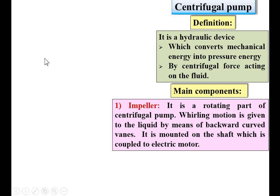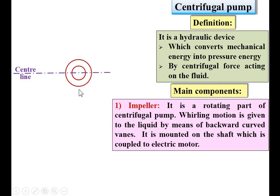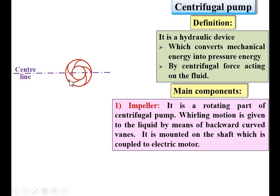So first I am going to draw part 1: impeller. This is the center line of the pump, and here is the impeller. These are the backward curved vanes. As per the description, the impeller is a rotating part of the centrifugal pump — it rotates in the clockwise direction so that whirling motion is given to the liquid by means of these vanes mounted on the impeller.